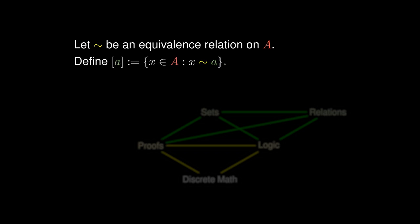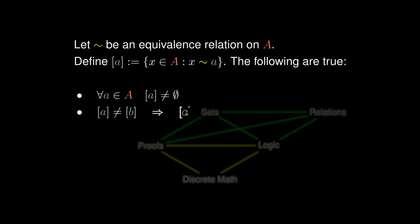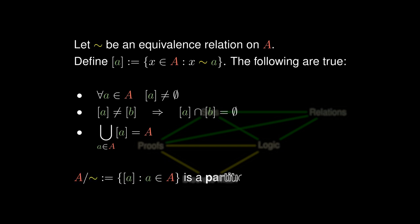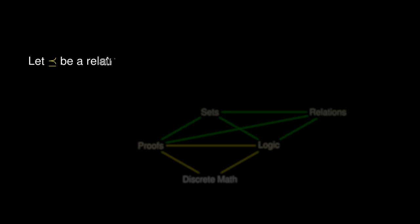We can collect all of the elements that are related to the element A and make the following observations. For any element in A, the equivalence class containing A is non-empty. Non-equal equivalence classes must be disjoint, and taking the union across all equivalence classes gives us all of A. The collection of these equivalence classes forms what we call a partition of A.